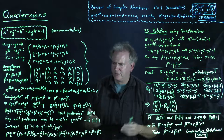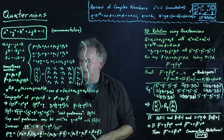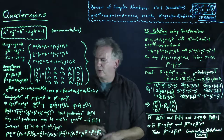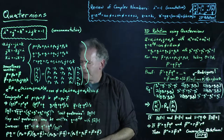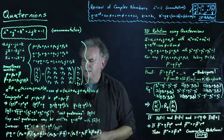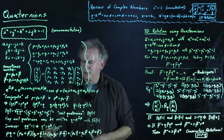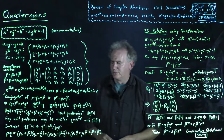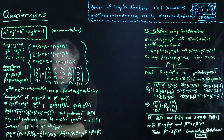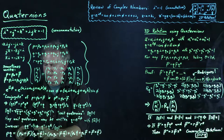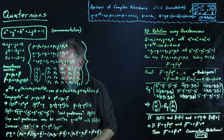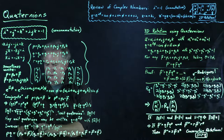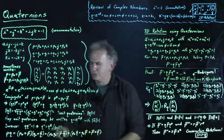We can define the inverse: q times q⁻¹ = 1. Applying the above relationships, it follows that q⁻¹ = q* / ‖q‖². You can see this by multiplying from the left by q*: q* · q = ‖q‖², so q⁻¹ = q* / ‖q‖².